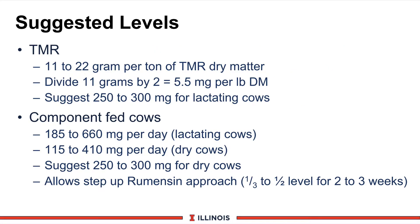Now let's look at levels of adding monensin to the lactating dairy cow ration. Due to new FDA changes, there are two guidelines. The first is for TMRs or total mixed rations: you can add 11 to 22 grams per ton of TMR dry matter. Another way to express this — taking the 11-gram level and dividing by 2 — gives 5.5 milligrams per pound of dry matter. So a cow eating 50 pounds of dry matter would receive slightly more than 250 milligrams per cow per day. This is how FDA requires the labeling to be done.